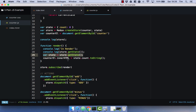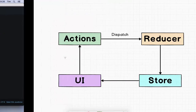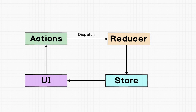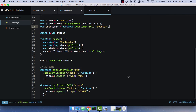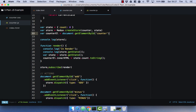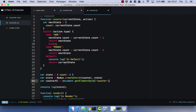Within our reducer we have a switch statement that does something depending on the type of action we pass. In our reducer we create a new state object because we don't want to mutate our current state — we have a pure function. So we create that new state object, and in our case statements we update that new state and simply return it. We then subscribe our store to a render function. When we subscribe our store to that callback, it gets called every time an action gets dispatched. In that render function we update our UI. Once you actually understand what's going on, it is actually relatively simple.